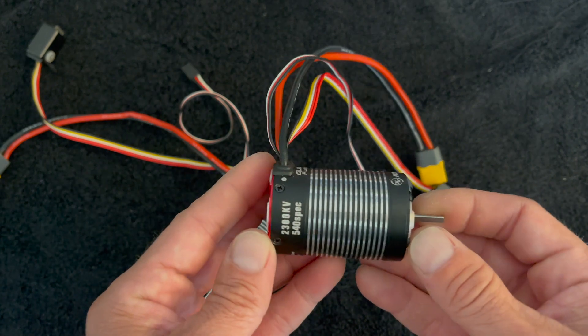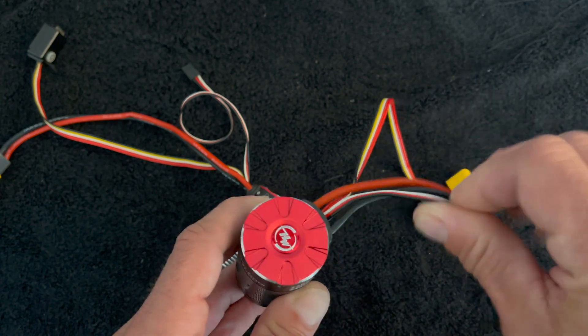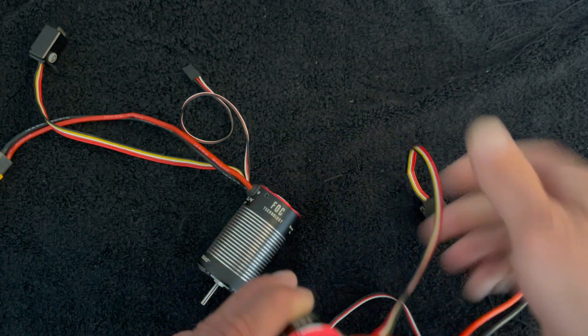FOC brushless setups. The motor is this section here and the speed control is actually built into the motor. So coming out is your receiver wire for your throttle channel, your power plug for your battery, and then your button